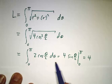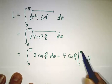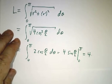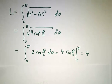2 cos θ over 2. Integral of that is 4 sin θ over 2. Evaluate it at 0 and π and the answer is 4. So the length of half the cardioid is 4. The length of the entire cardioid is 8.